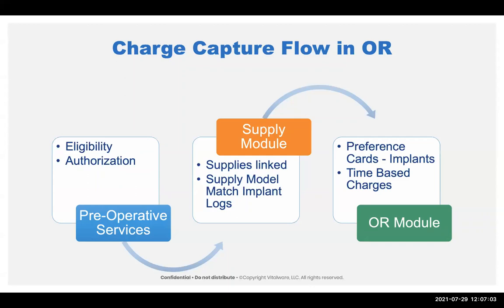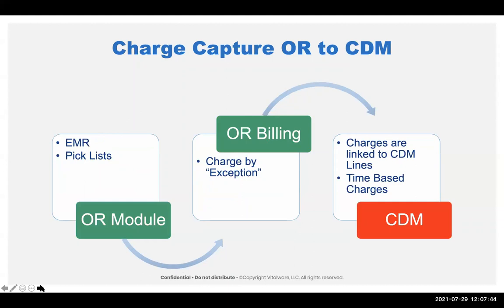Then we have the supply module. A lot of times preference cards are linked to this. There's a supply module match implant log. We will go to the implant log when we audit and say, what actually was implanted? The implant log is the source of truth. Sometimes the implants actually have the wrong C code on them, so when you look at the make, the model, and the serial number, you're able to determine what the right one was. Then it goes to the OR module where preference cards, implants, and time-based charges reside. At this point, you have three different modules. That OR module then links to the EMR and the PIC lists, which comes over to OR billing.